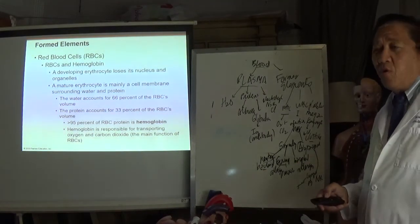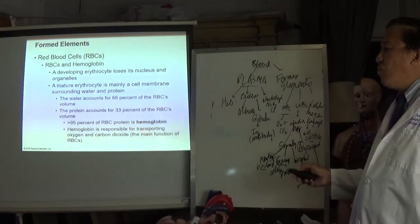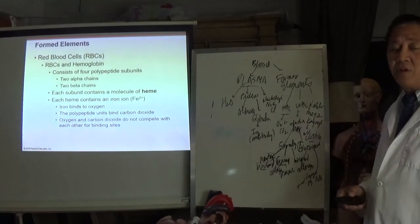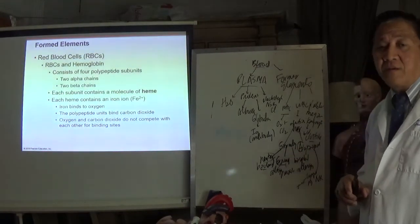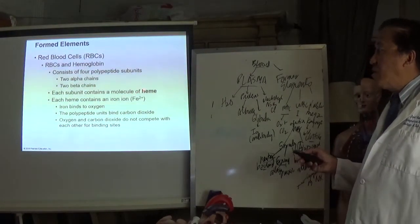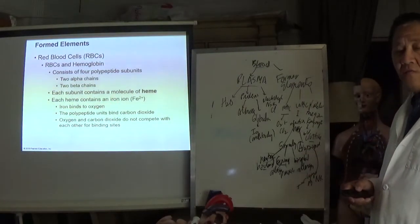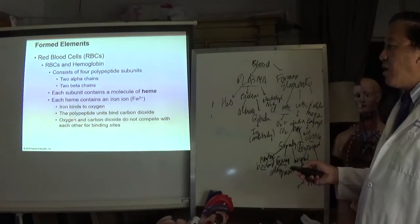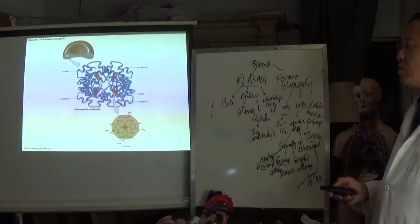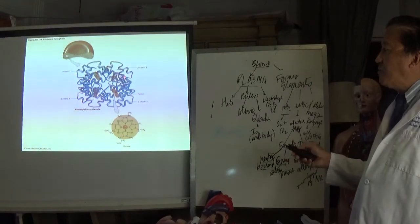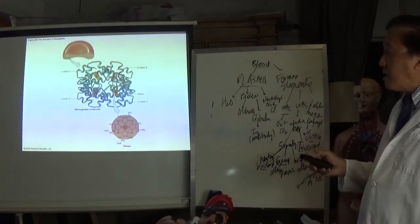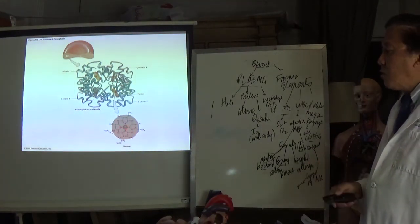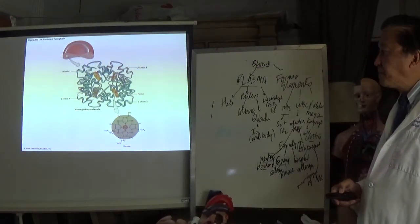The protein in red blood cells is hemoglobin. It has four polypeptide subunits — two alpha and two beta chains. In the middle is a porphyrin ring (P-O-R-P-H-Y-R-I-N), called the heme component, which contains iron. It is the iron that binds to oxygen. Carbon dioxide binds to the polypeptide units — the two alpha and two beta chains — so oxygen and carbon dioxide do not compete for the same binding sites.